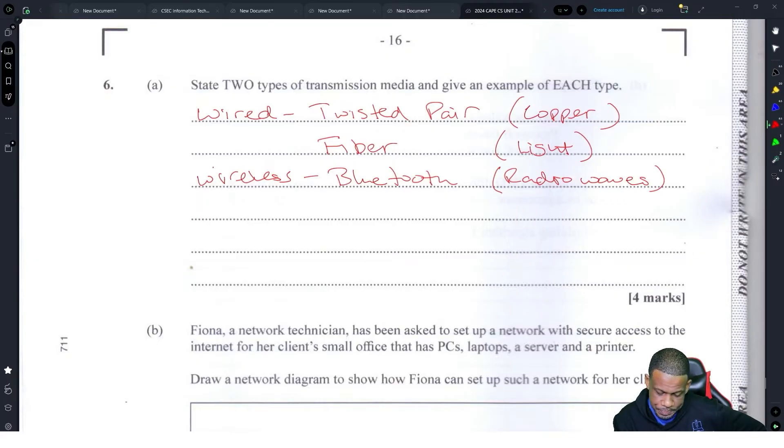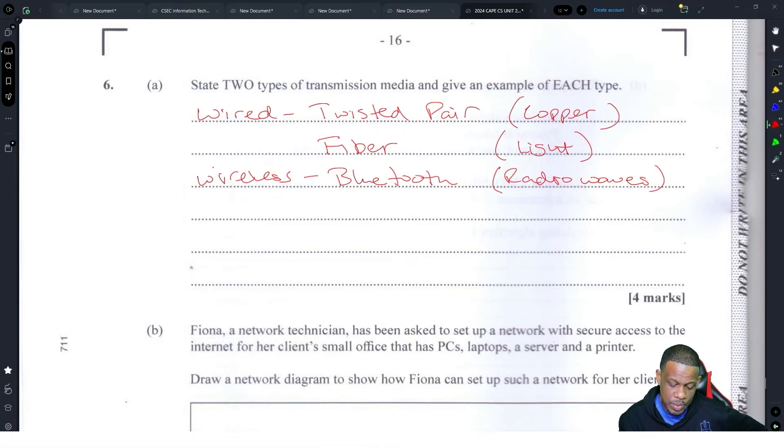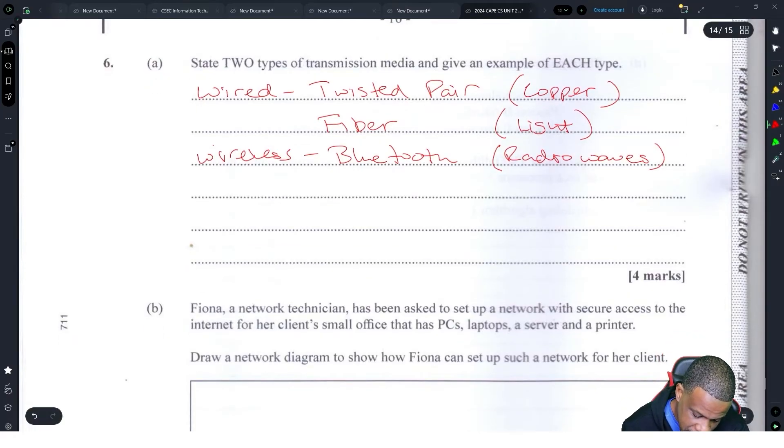Because the media is the actual physical way that is transferred: copper, light, radios. Putting all that down, they had to give you the mark somewhere because you know everything about transmission media. You know that it's wired and wireless. Wired is twisted pair and fiber, copper and light. Wireless is Bluetooth because it uses radio waves, or Wi-Fi, or infrared. Somewhere inside here you'll get marks.